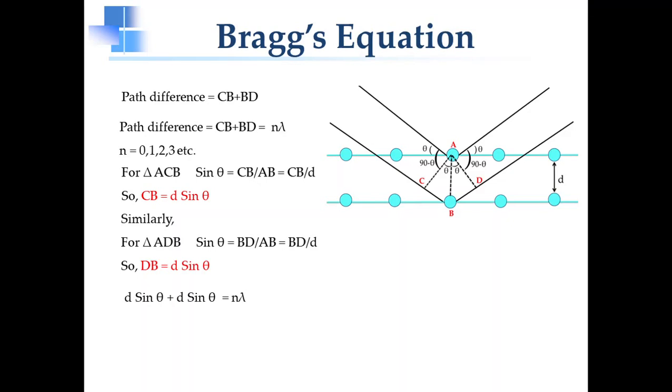Similarly, in triangle ADB, sin theta is equal to DB upon AB, and AB is equal to D, so DB is equal to D sin theta.